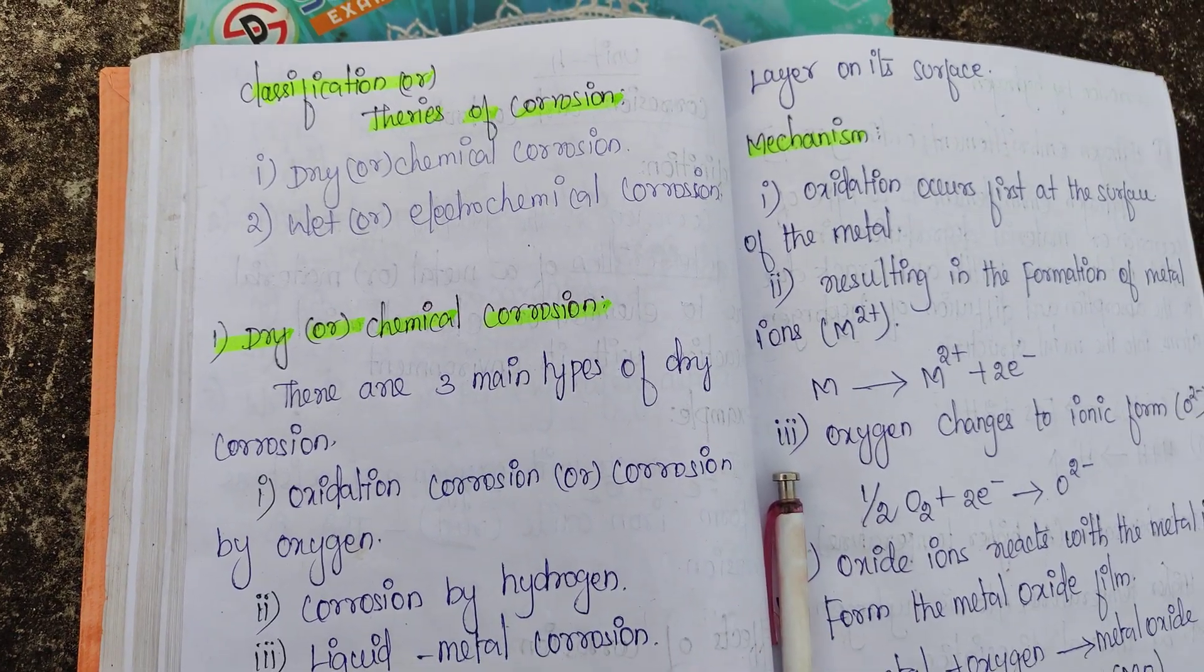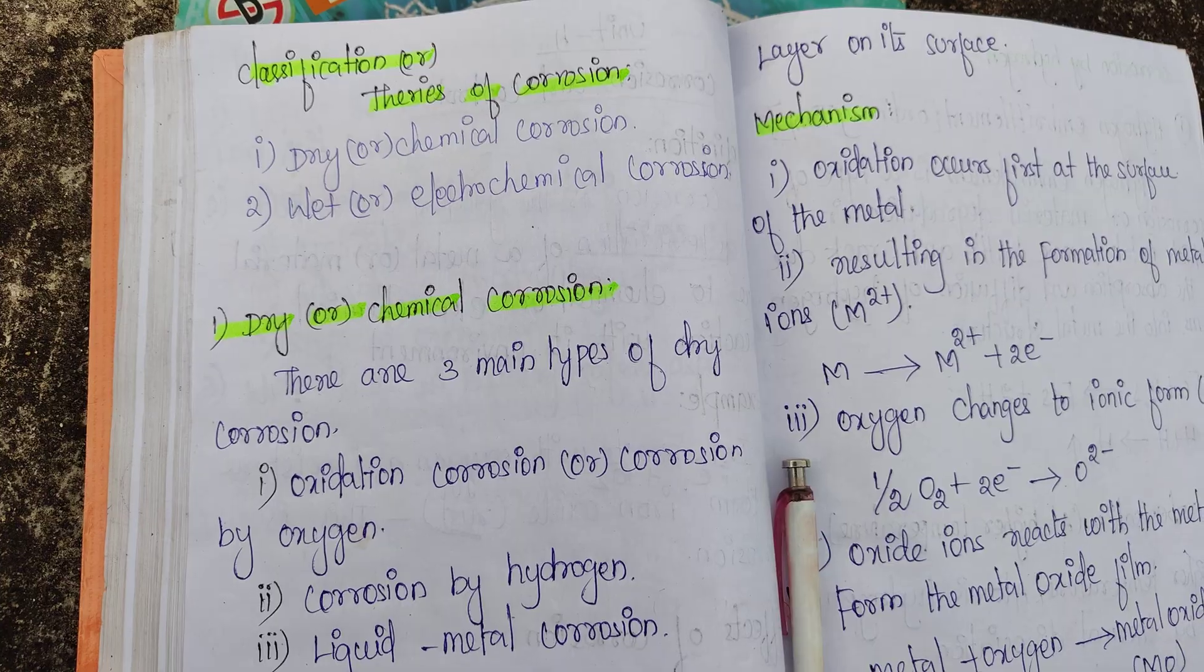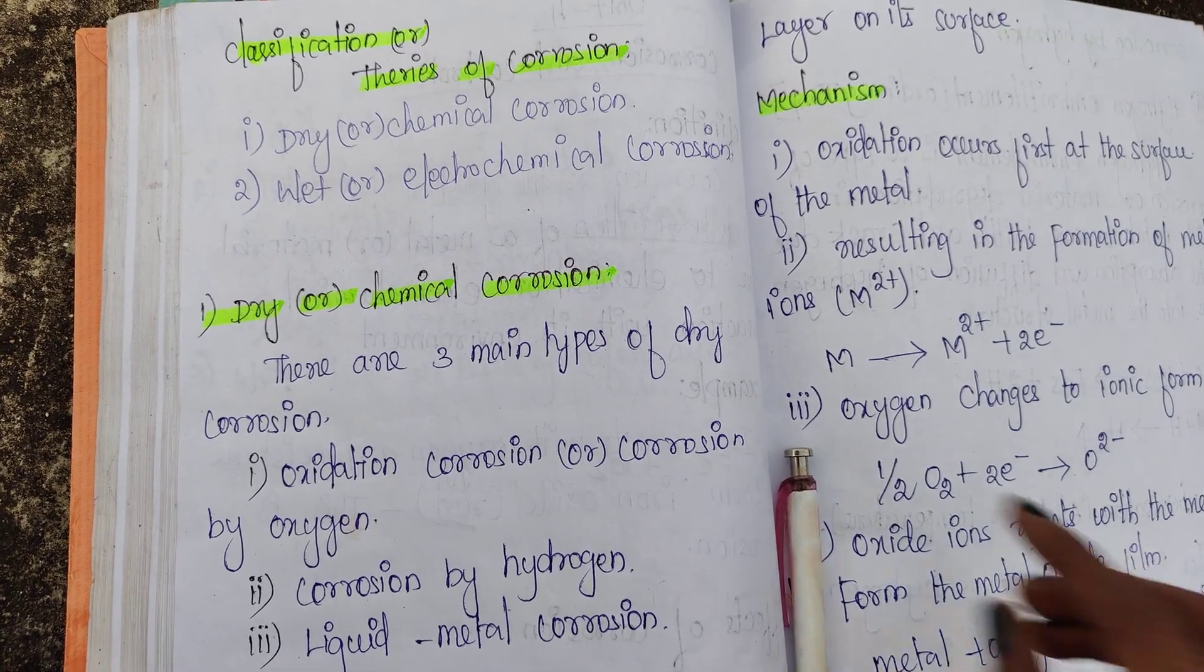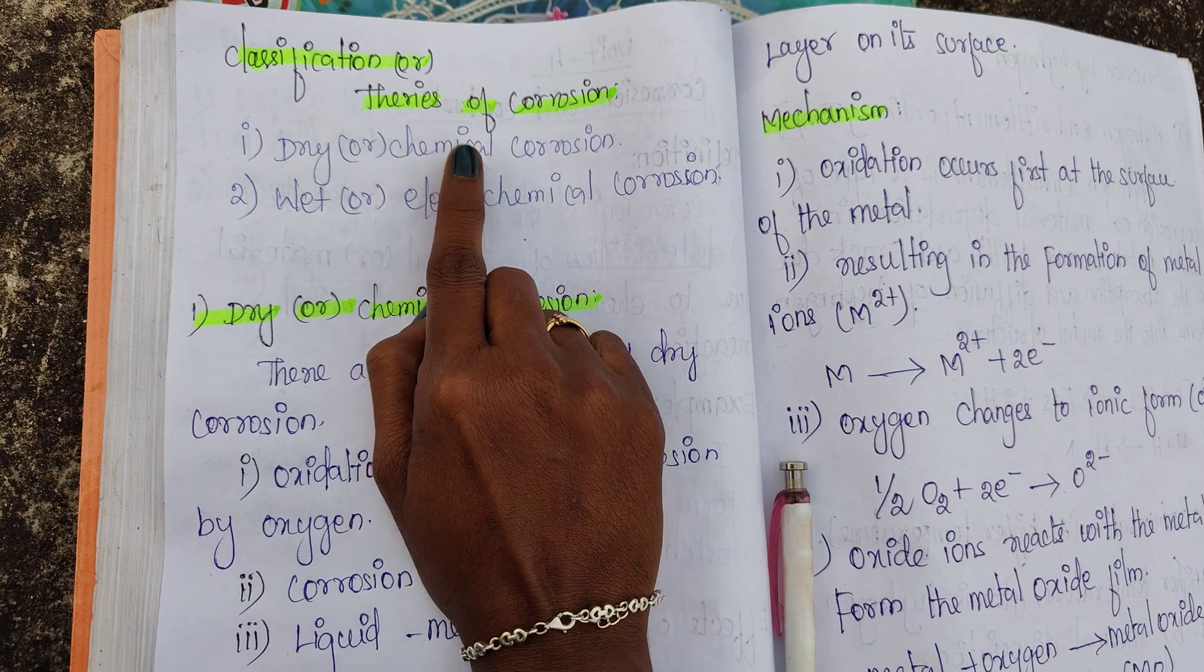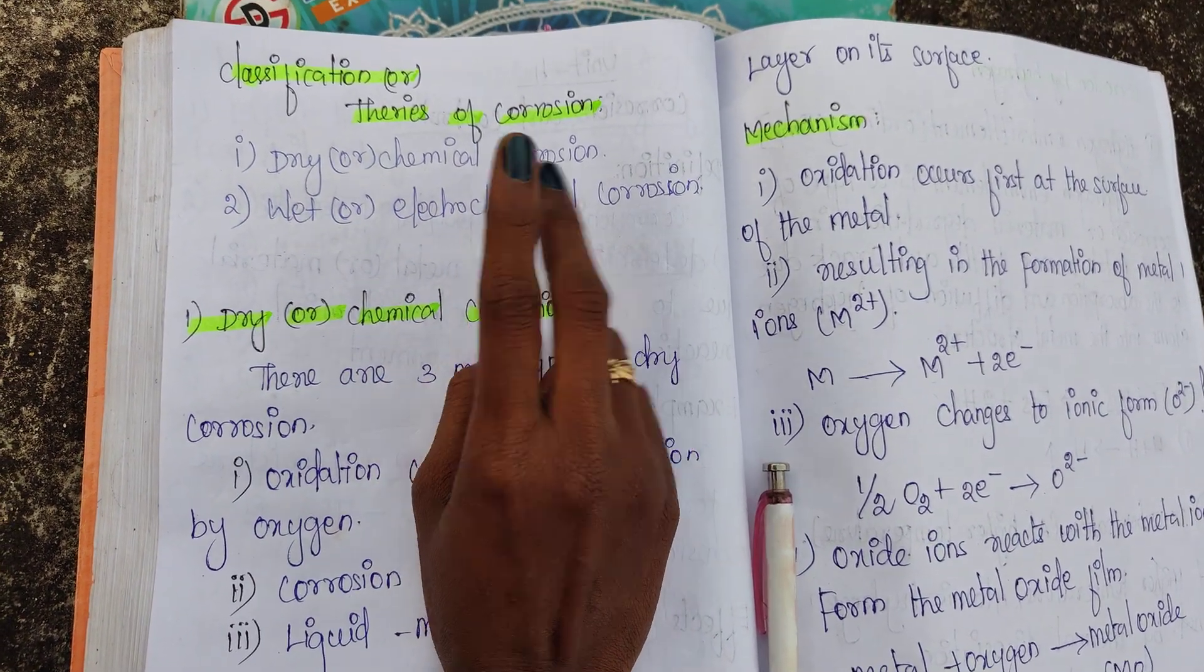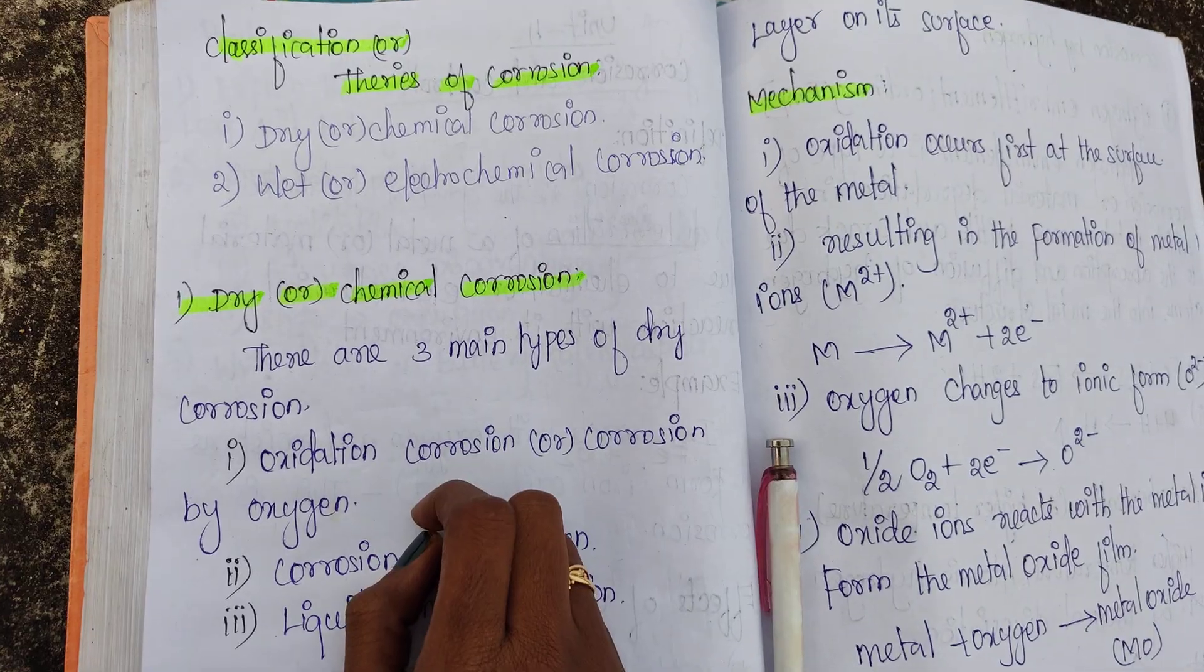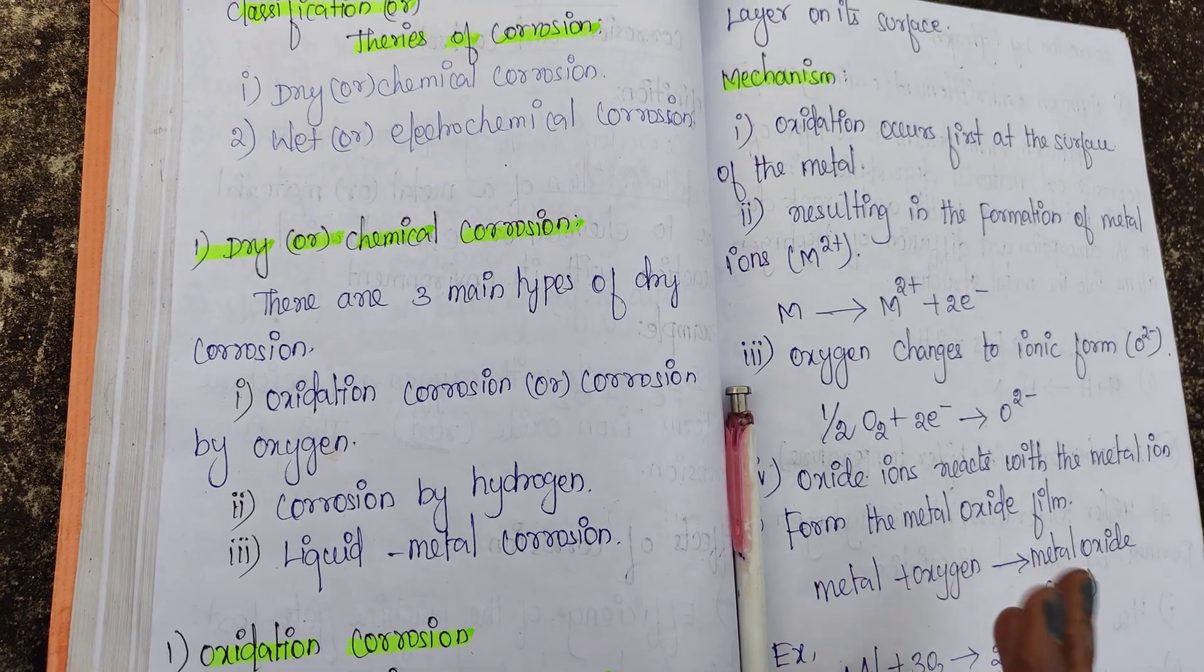In classifications of theories of corrosion, there are two classifications. One is dry or chemical corrosion, and the other is wet or electrochemical corrosion. We are going to see the first one in this video.